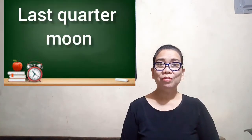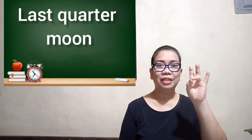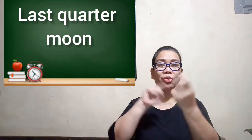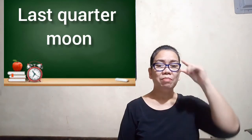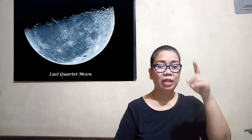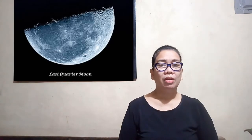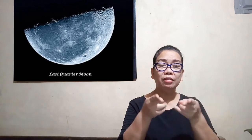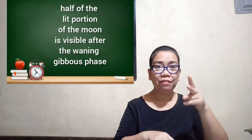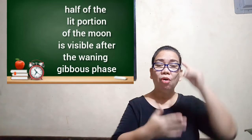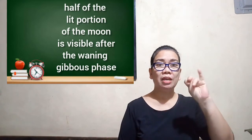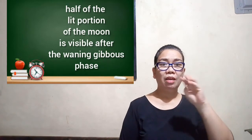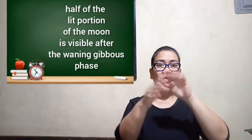Number seven is the last quarter moon, or we also call it half moon. It is when half of the lit portion of the moon is visible after the waning gibbous phase.